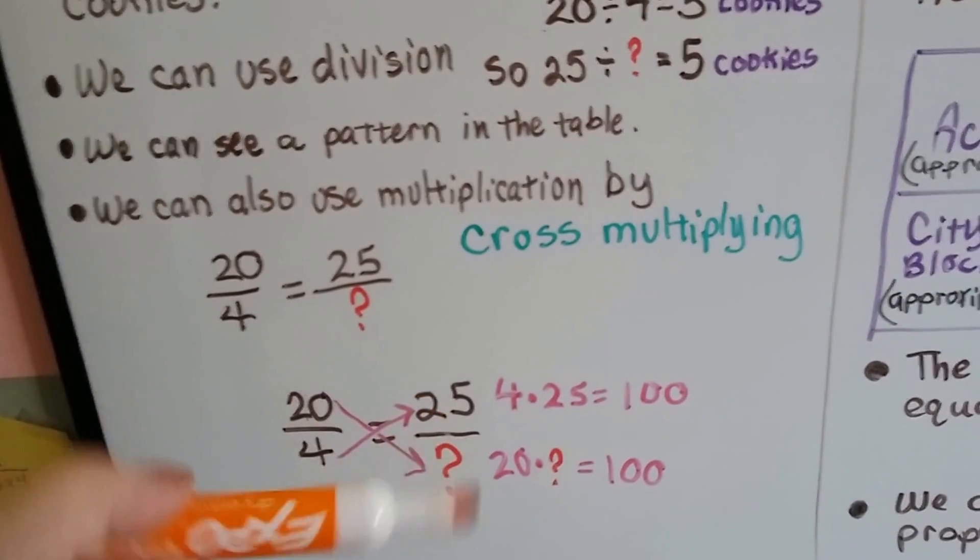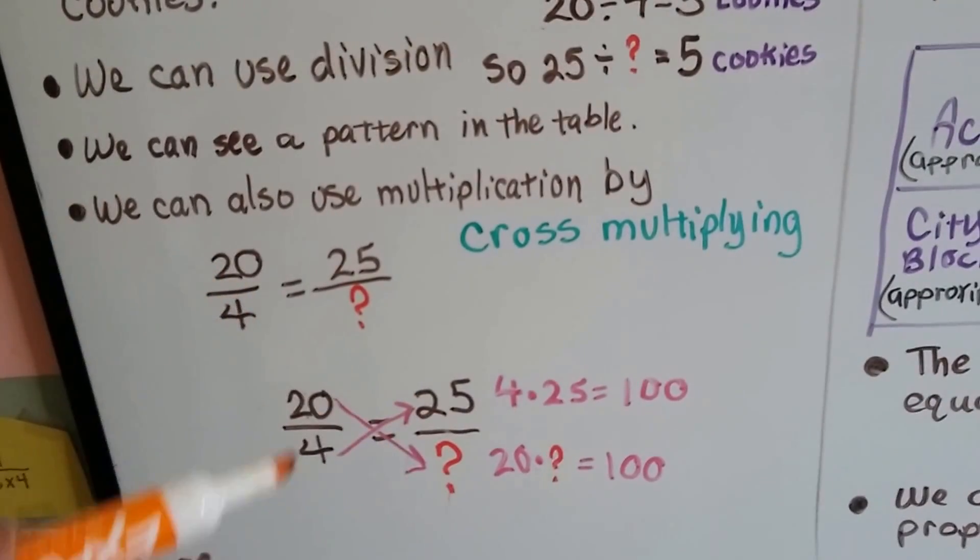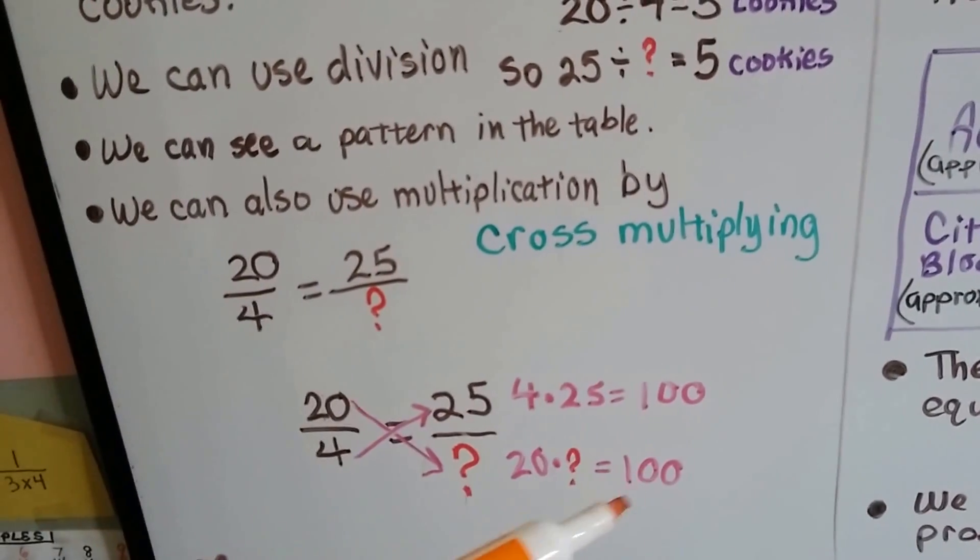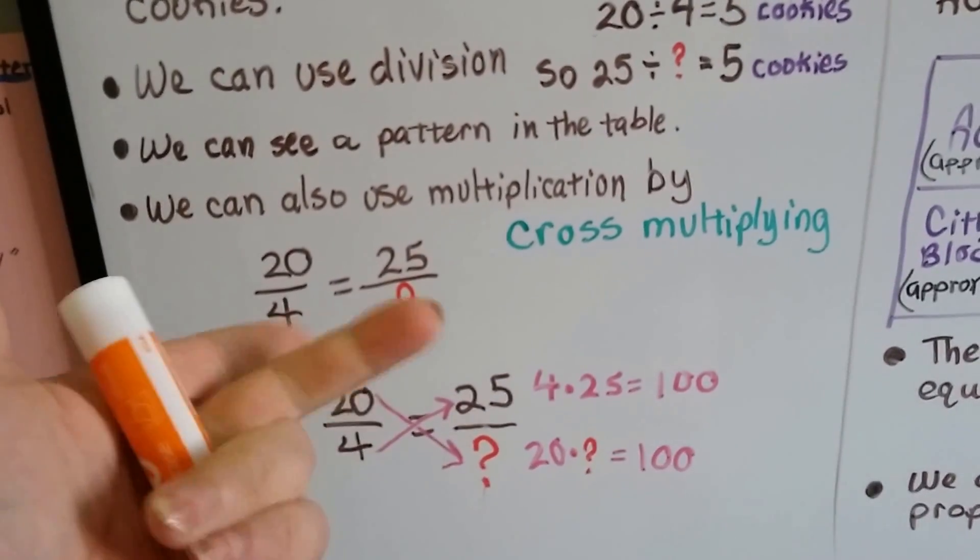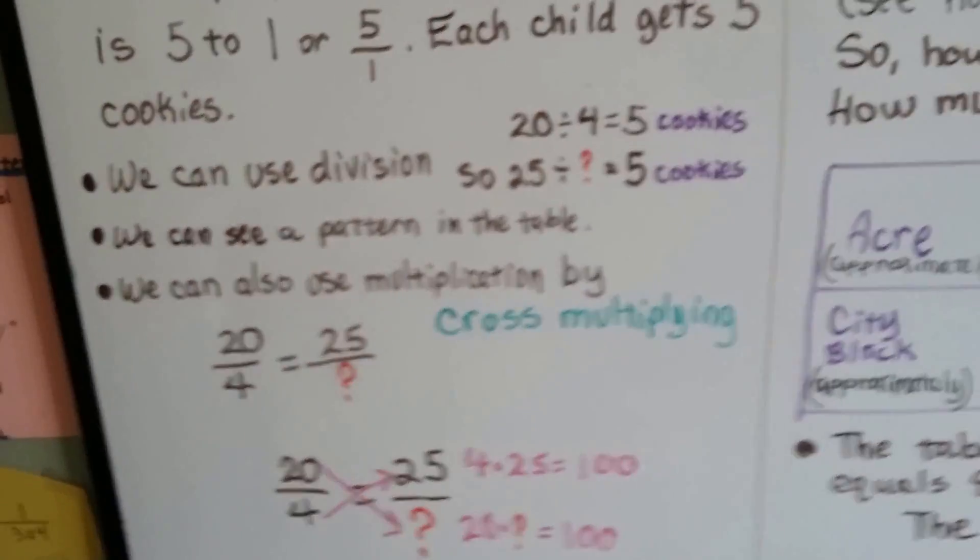We're making an X. So, 20 times 5 equals 100. We can see a 5 goes there. We've got division, pattern, and multiplying by doing cross-multiplication.